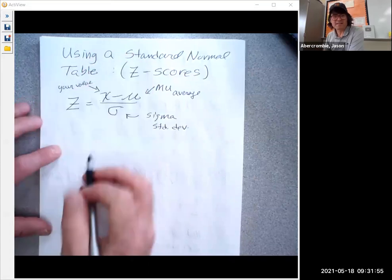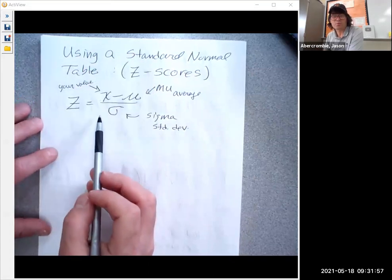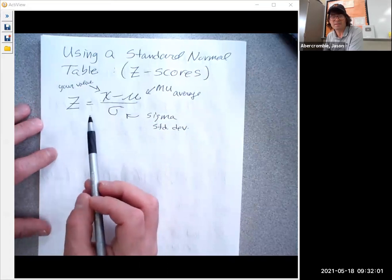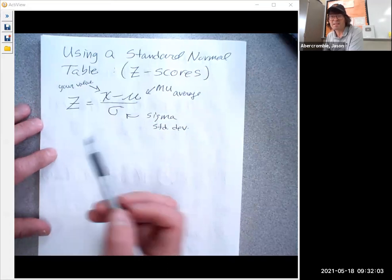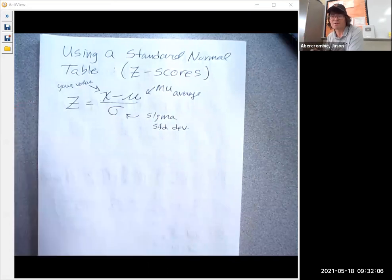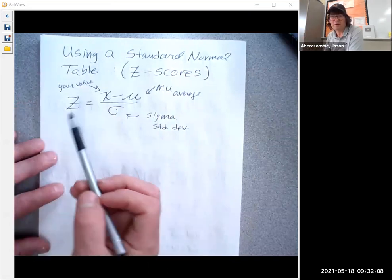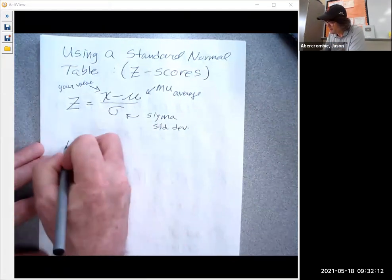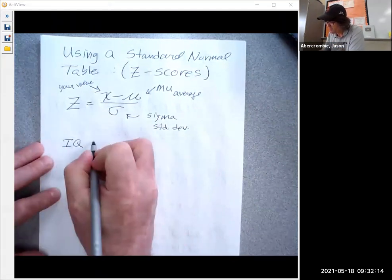And what Z tells you is whether your score is below average or above average by whether it's negative or positive. The bigger Z is if it's positive, the higher you are above average. And if it's negative, the farther down you are below average.